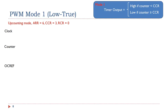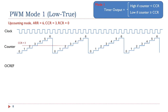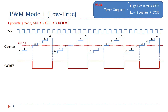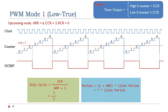PWM has two modes: mode 1 and mode 2. In mode 1, the output is high if the counter is less than the compare and capture register (CCR); otherwise, the output is low. Mode 1 is a low-true mode. For example, if CCR is 3 and ARR is 6, when the counter is less than 3 the output is high, and when the counter is greater than or equal to 3 the output is low. The duty cycle is 3 over 7, and the PWM period is 7 times the clock period. Software can set the PWM frequency by modifying the ARR register, and change the duty cycle by modifying the CCR register.